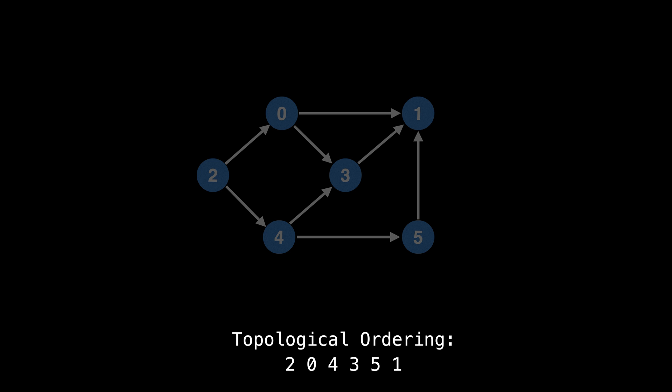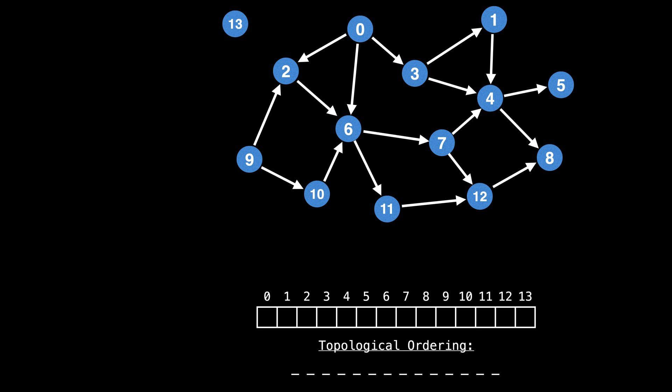Now I want to look at a slightly larger example in some more detail. Here's another graph. Feel free to pause the video and try to find a topological ordering of the nodes on this graph. Remember that the topological ordering you find may be different than the one I find because topological orderings are not always unique. The first bit of information we need to keep track of is the incoming degree of each node.